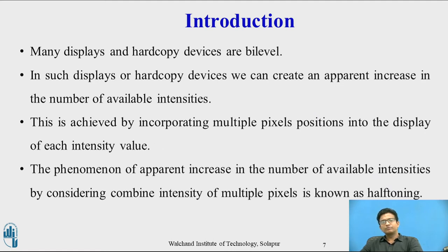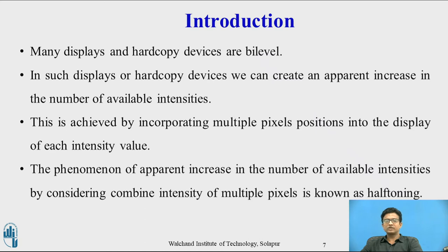Many display and hard copy devices are bi-level — they can only produce two intensity levels. In such devices, we can create an apparent increase in the number of available intensities by incorporating multiple pixel positions into the display of each intensity value. When viewing a small area from a sufficiently large distance, our eyes average fine details and record only the overall intensity. This phenomenon of apparent increase in available intensity by considering combined intensity of multiple pixels is known as half-toning.